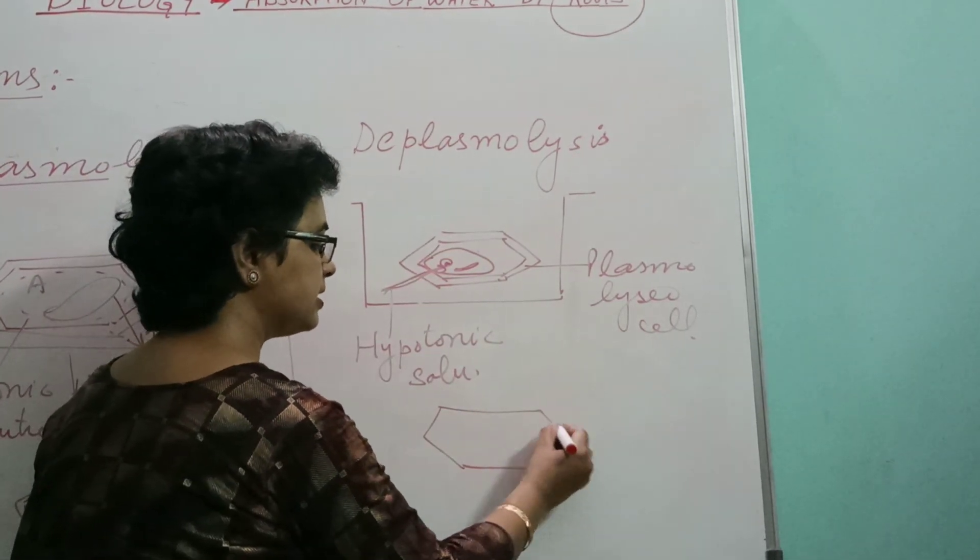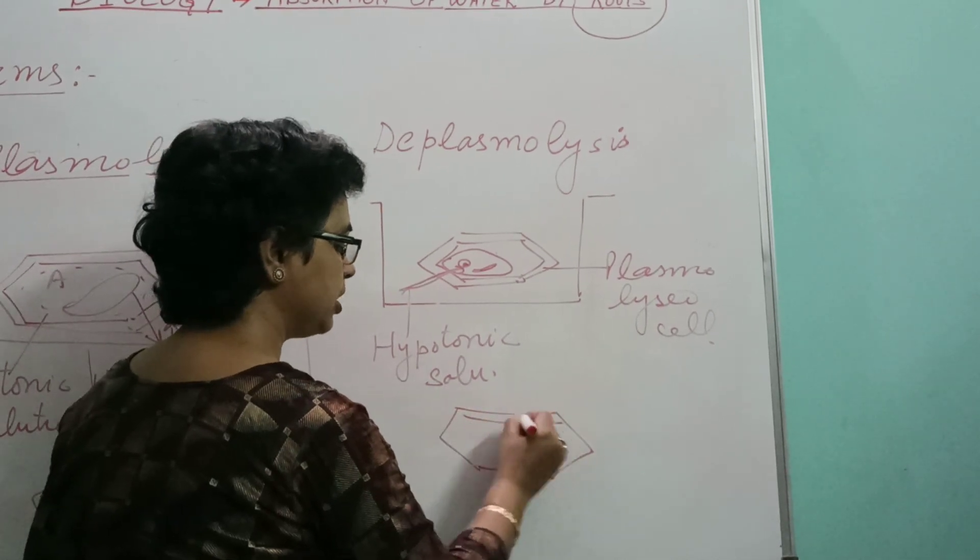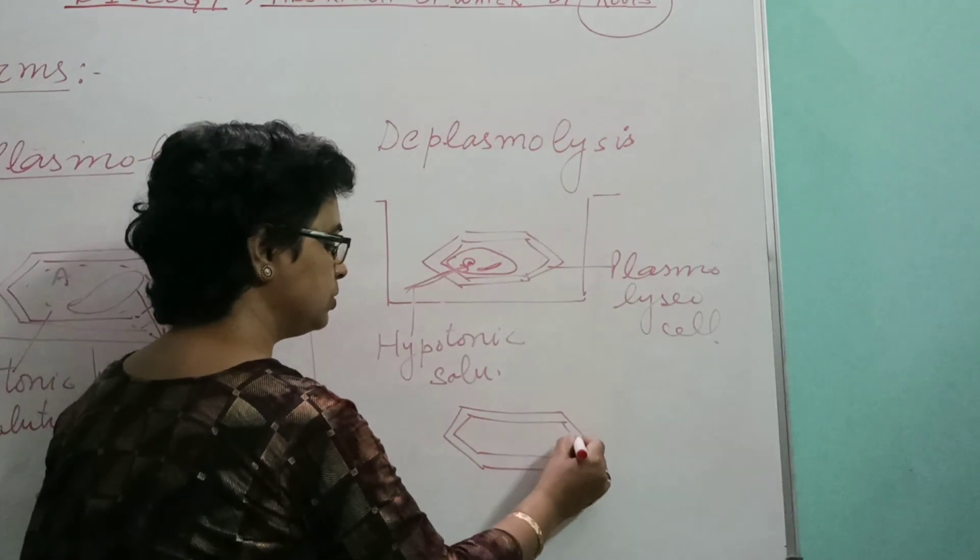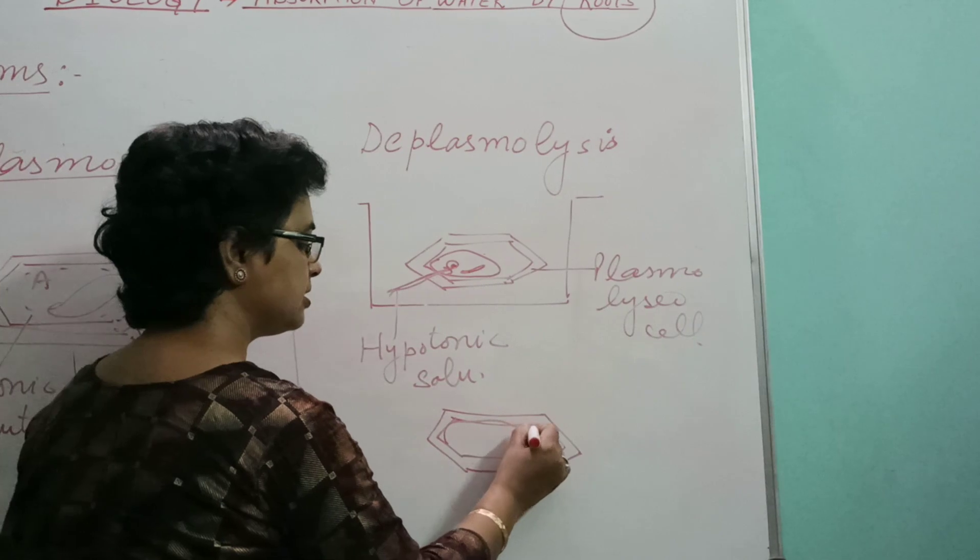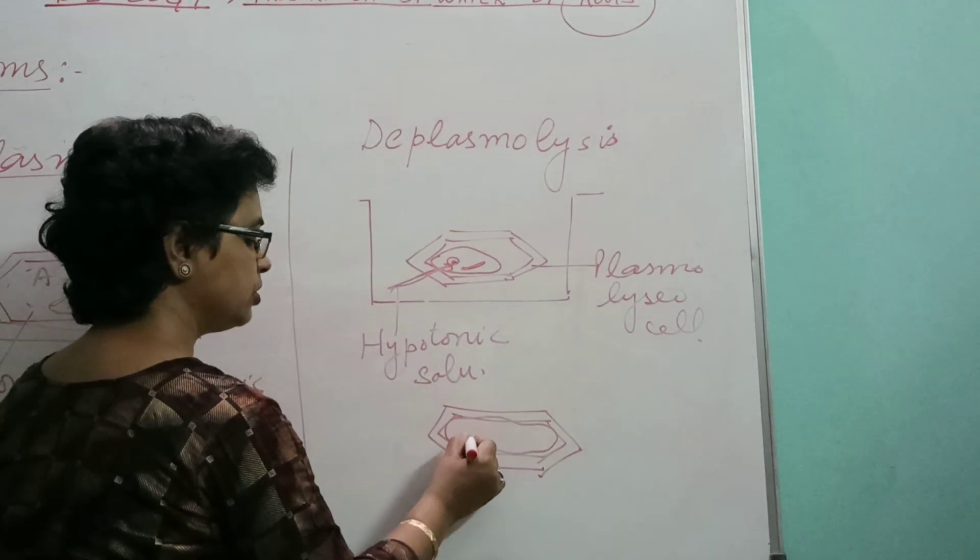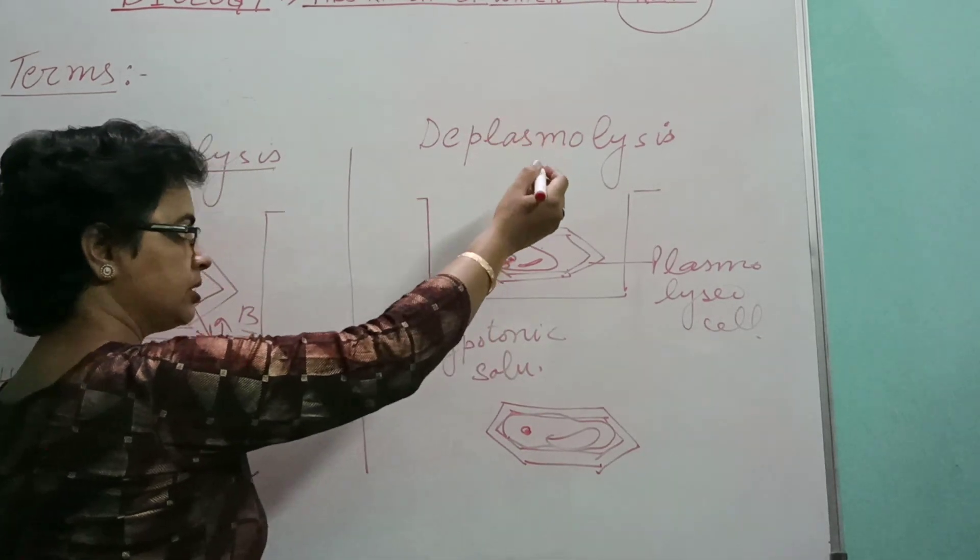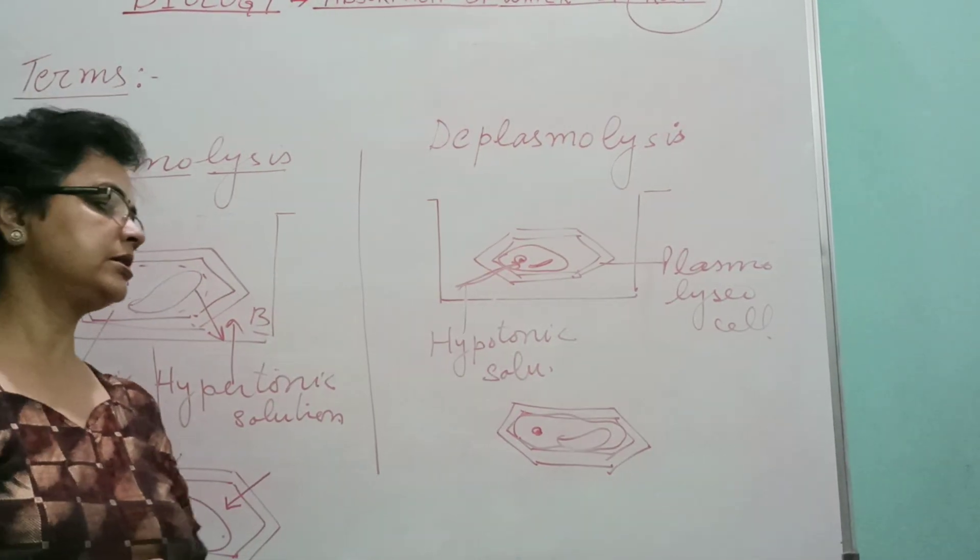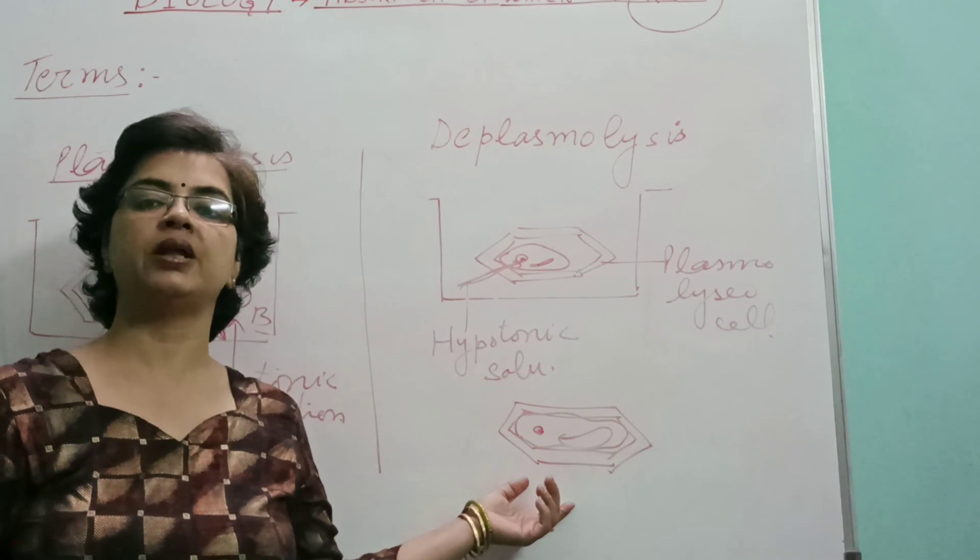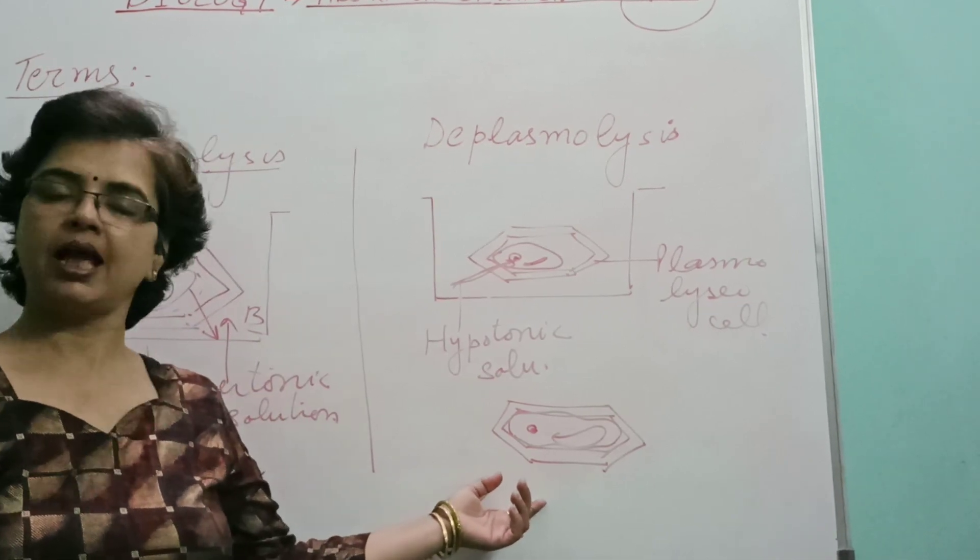When any plasmolyzed cell is kept into hypotonic solution and it again comes into turgid condition, then the process is termed as deplasmolysis and the cell is termed as a deplasmolyzed cell. Thank you.